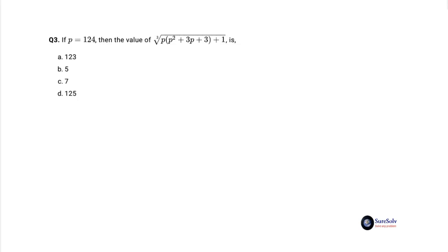Answer option d, 125. Simple if you discover the pattern. Let's write down. Target expression is cube root of p cubed plus 3p squared plus 3p plus 1, equals cube root of p plus 1 whole cube, equals p plus 1, equals 125. Answer option d, 125.